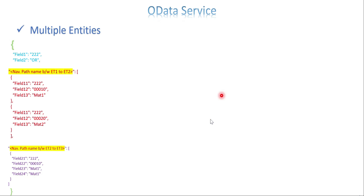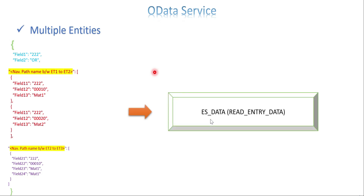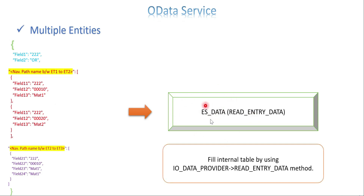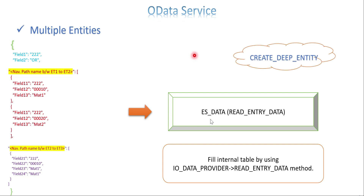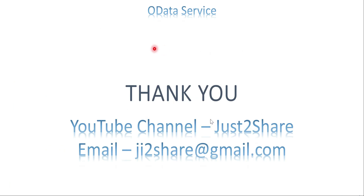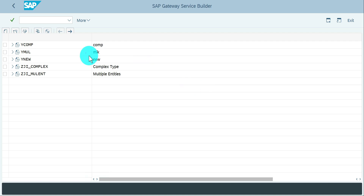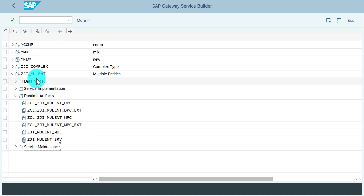We have already handled the input data. Now, how do we read this inside the method? The method is create deep entity — unlike GET which uses get_expanded_entity_set, for POST we use create_deep_entity. This method has a parameter called io_input_provider, and using the read_entry_data method on it I'm going to read the incoming data into es_data, which is a method parameter typed as any. Because it's dynamic, whatever you passed will be automatically mapped to the internal table. That is how we receive the inputs inside the create_deep_entity method.